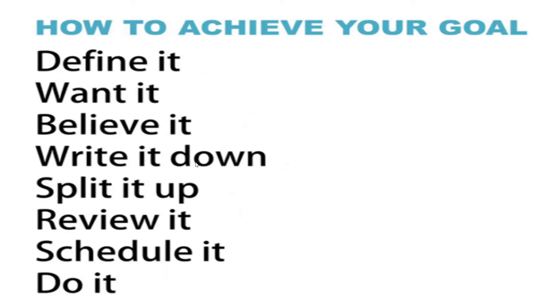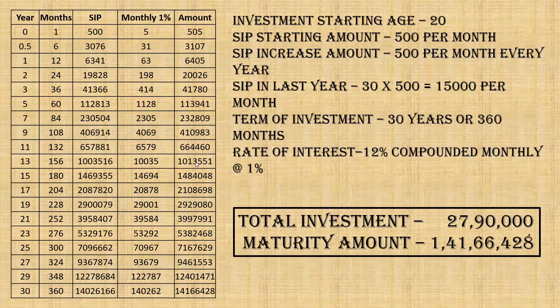In the following example, we start investing at the age of 20 with a monthly SIP of just Rs. 500. The assumed rate of interest is 12% compounded at 1% per month. The plan is to increase just Rs. 500 per month every year. That is, from the second year, the SIP would be Rs. 1000 per month, and in the third year, it would be Rs. 1500 per month, and so on. That way, the SIP in the final or 30th year would come to 30 multiplied by 500, which is equal to Rs. 15,000 per month. The total investment in such a plan comes to Rs. 27,90,000 over a period of 30 years, and the maturity amount at the end of the term comes to 1.42 crores.